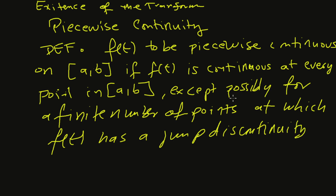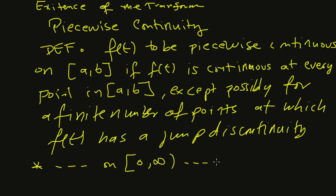Similarly, a function f of t is said to be piecewise continuous on zero to infinity if it is piecewise continuous on zero to n for all n greater than zero.